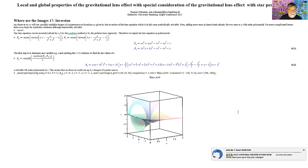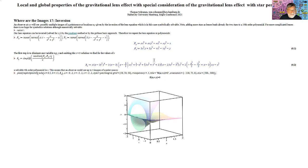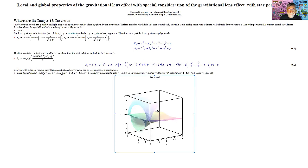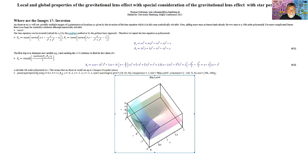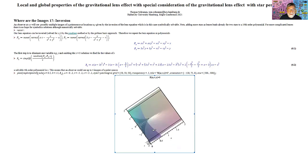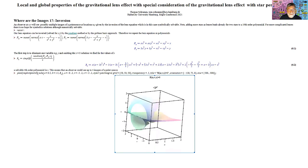To find where the images are, we need to invert the lens equation, which for a general lens must be done numerically. However, we are lucky to find a polynomial version of our equation. To solve for the deflector coordinates we use the resultant method to get a fourth-order polynomial, showing that we can have up to four equal images of the point source. The implicit 3D plot command gives us geometric insight into why and where the different numbers of images occur.